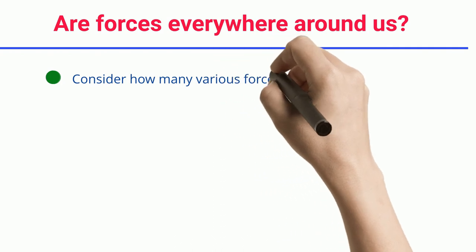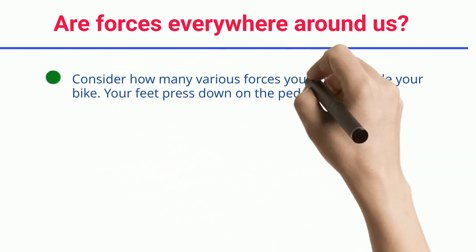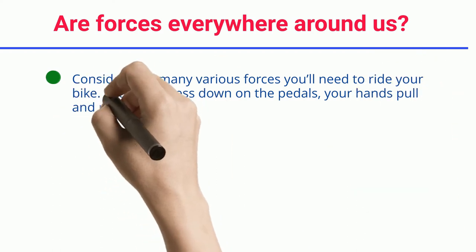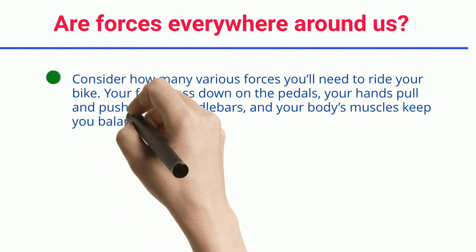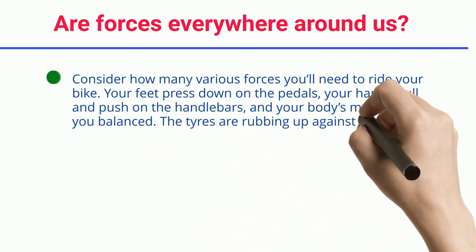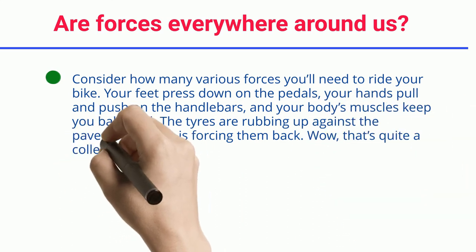An item can be affected by many forces at the same time. Consider how many various forces you'll need to ride your bike. Your feet press down on the pedals, your hands pull and push on the handlebars, and your body's muscles keep you balanced. The tires are rubbing up against the pavement, which is forcing them back. Wow, that's quite a collection of forces.